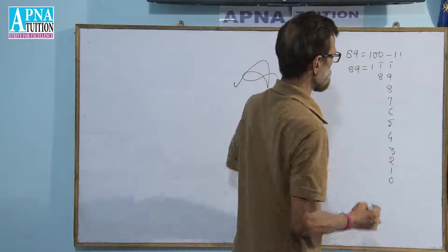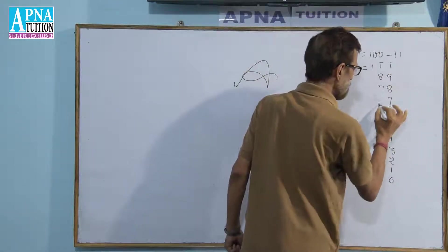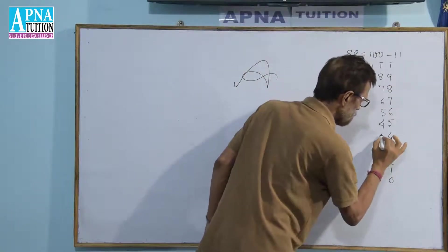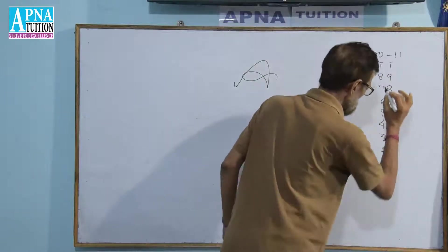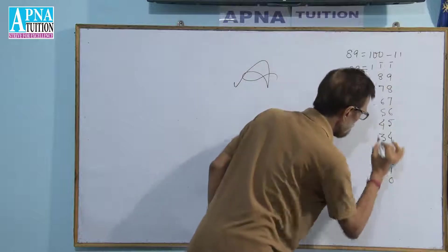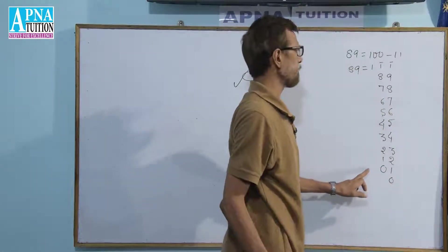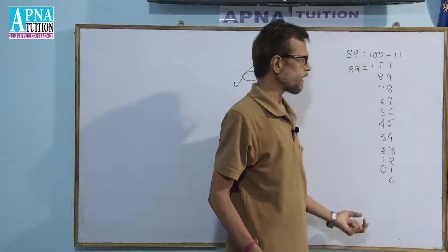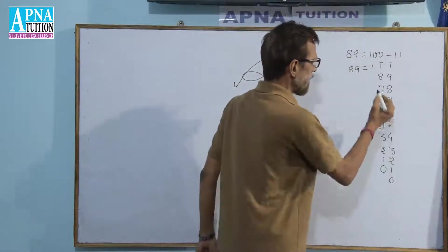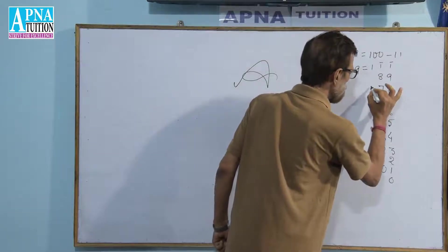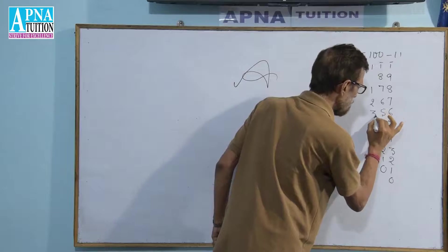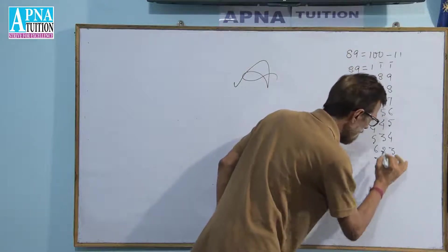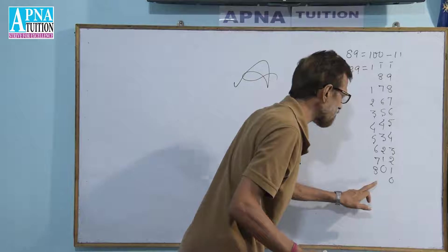Now again: 8 minus 1 becomes 7, 7 minus 1 is 6, 6 minus 1 is 5, 5 minus 1 is 4, 4 minus 1 is 3, 3 minus 1 is 2, 2 minus 1 is 1, 1 minus 1 is 0. Now we have 0 here, and when 0 is added to minus 1 we get a negative number, so we go further. Starting from 0: 0 plus 1 is 1, 1 plus 1 is 2, 2 plus 1 is 3, 3 plus 1 is 4, 4 plus 1 is 5, 5 plus 1 is 6, 6 plus 1 is 7, 7 plus 1 is 8. Now we have 801.